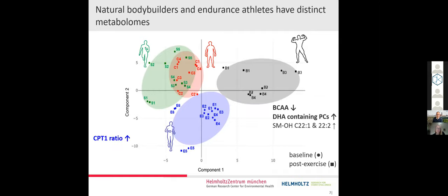In endurance athletes, we found an increased CPT-1 ratio. CPT-1 stands for carnitine palmitoyltransferase 1 ratio. It's a mitochondrial transmembrane enzyme. And increased lysophosphatidylcholines with 18 carbons and decreased alkyl-acyl-phosphatidylcholines. I will go into detail into some of the bolded metabolites or ratios.